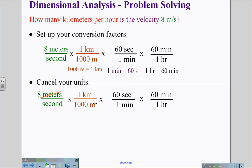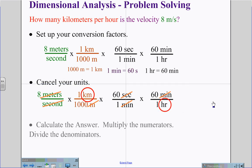Meters will cancel with meters. Seconds will cancel with seconds. Minutes will cancel with minutes. And note that we end up with kilometers and hours, kilometers per hour, as our final solution. When we calculate our answer, we multiply the numerators and divide the denominators. So this is going to be 8 times 60 times 60 divided by 1,000. This comes out to be 28.8 kilometers per hour. Our original question has only one significant digit. So we must round our answer to 30 kilometers per hour.